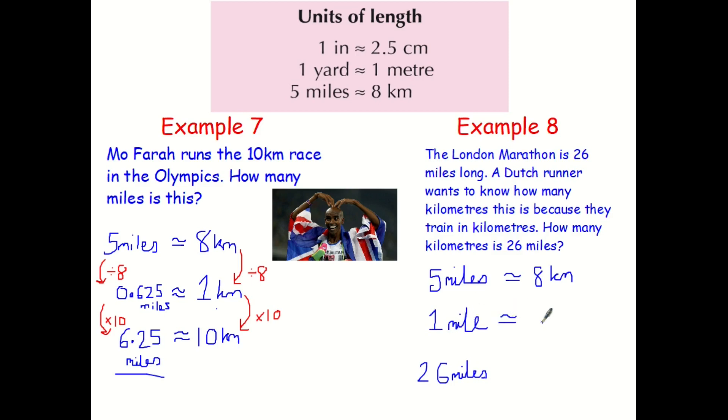And find out what one mile is. Well, how do you go from five down to one? One, you divide by five. Whatever you do to one side, you must do to the other. To get 1.6. And then how do you get up to 26 again? From one, you multiply it by 26. And multiply that side by 26 as well. So 1.6 multiplied by 26 gives me 41.6 kilometres.